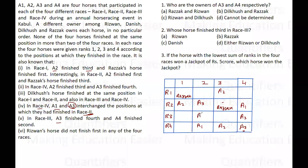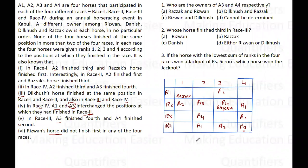In race 3, a3 finished fourth and a4 was second. Also, Rizwan's horse did not finish first in any of the four races. Now, in race 2 we have positions for a1, a2, and a3 already filled — that means the remaining position goes to a4. So a4 is Razak's horse.